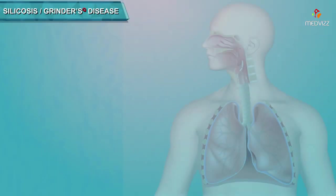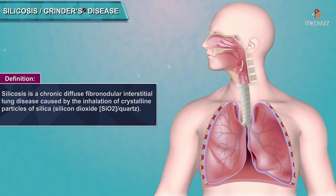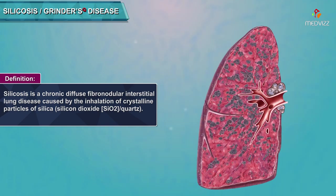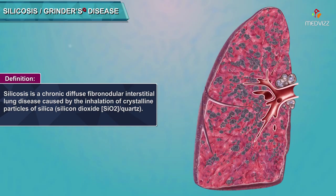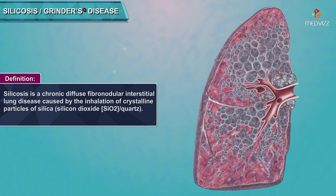Silicosis, or Grinder's Disease. Silicosis is a chronic, diffuse, fibronodular interstitial lung disease caused by the inhalation of crystalline particles of silica or silicon dioxide (SiO2), or quartz.